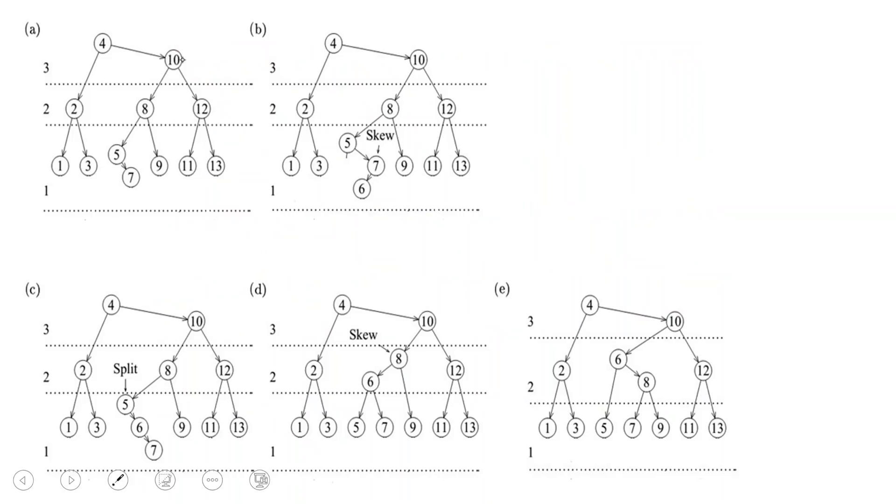So here this node has children 8 and 12, they change level. You go from level 3 to level 2, this is good. Also 4 to 2 you change level. In this case, you don't change level. 4 has the right child 10, which is in the same level.